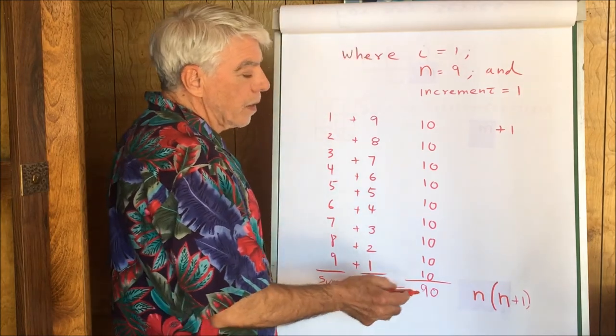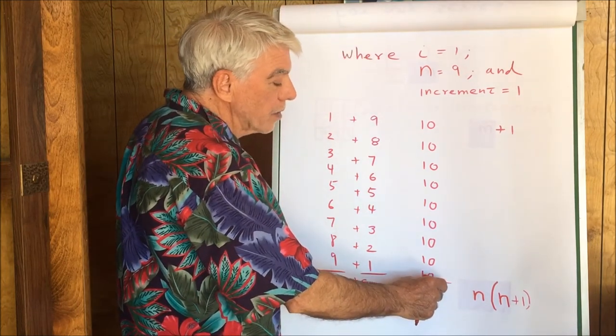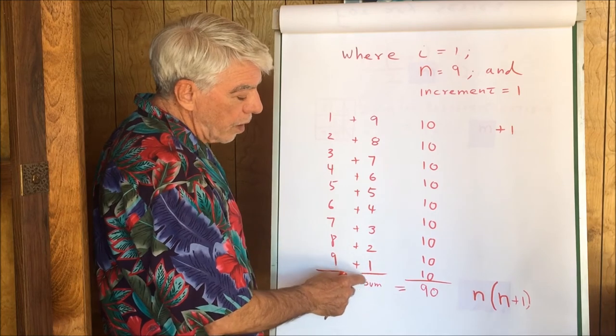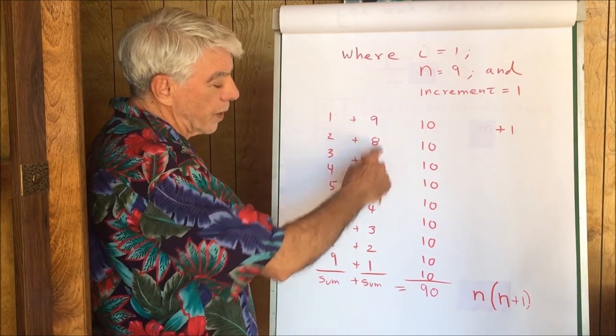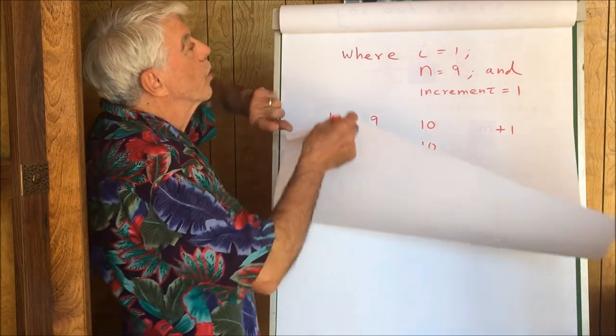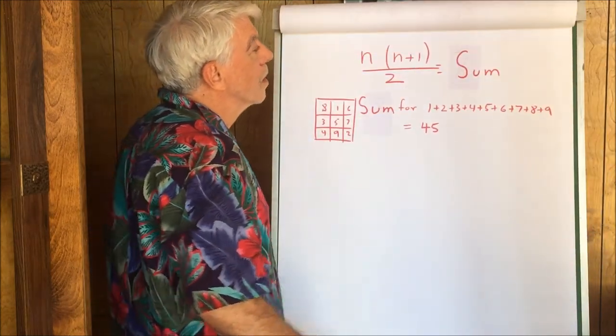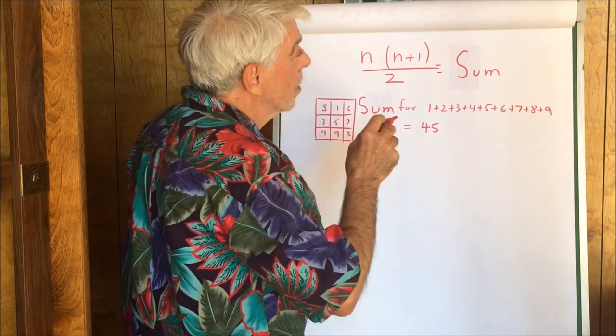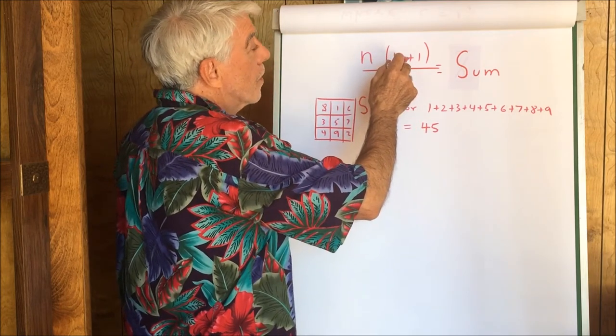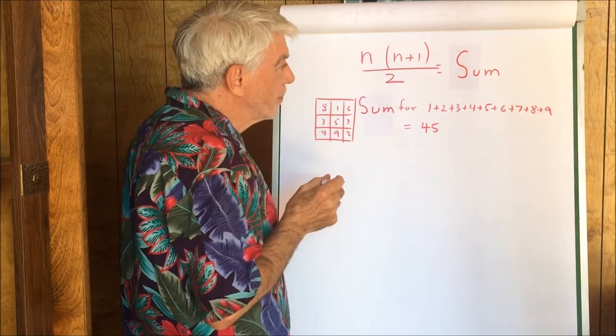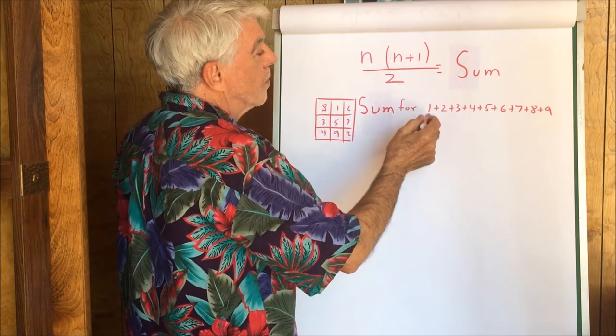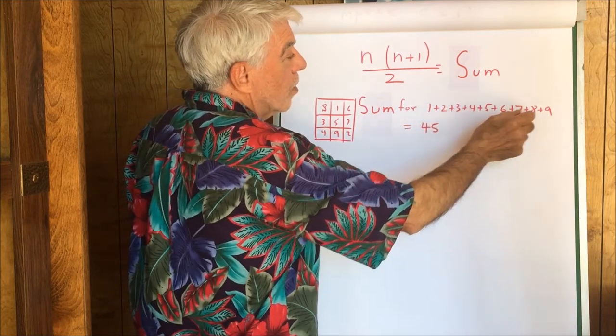Now we have to remember that this 90 is this sum plus this sum. So if we wanted to know the value of this sum, we would divide by 2. We can divide by 2 because these two sums are identical. Let's go over here and do that. So the sum of the 1 through 9 is given by n times the expression n plus 1 divided by 2. 9 times 10, 90 divided by 2 gives us 45.